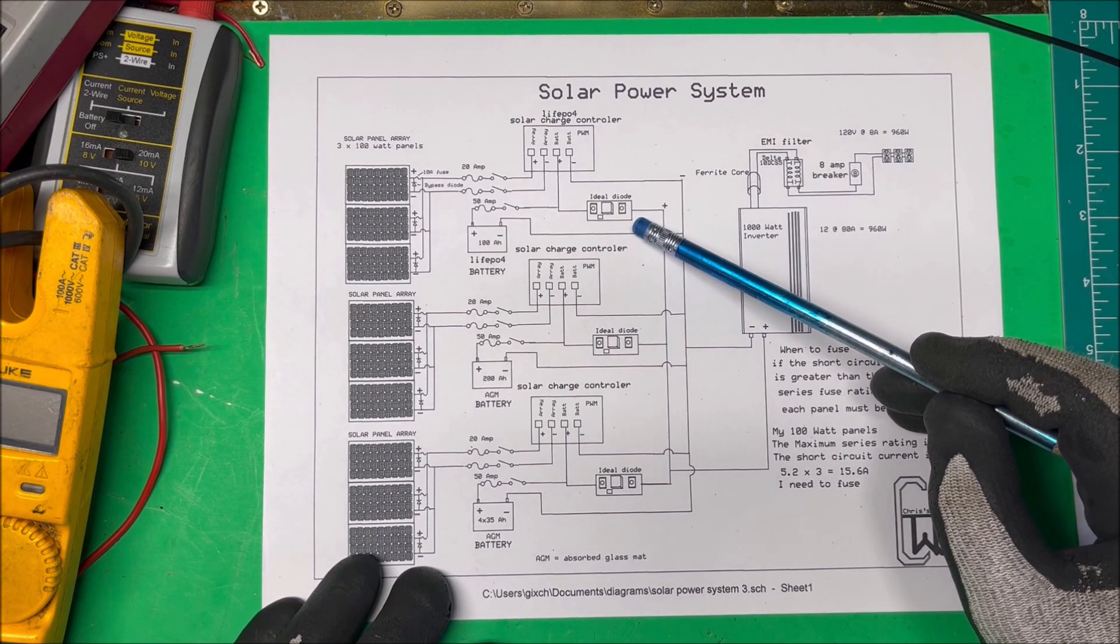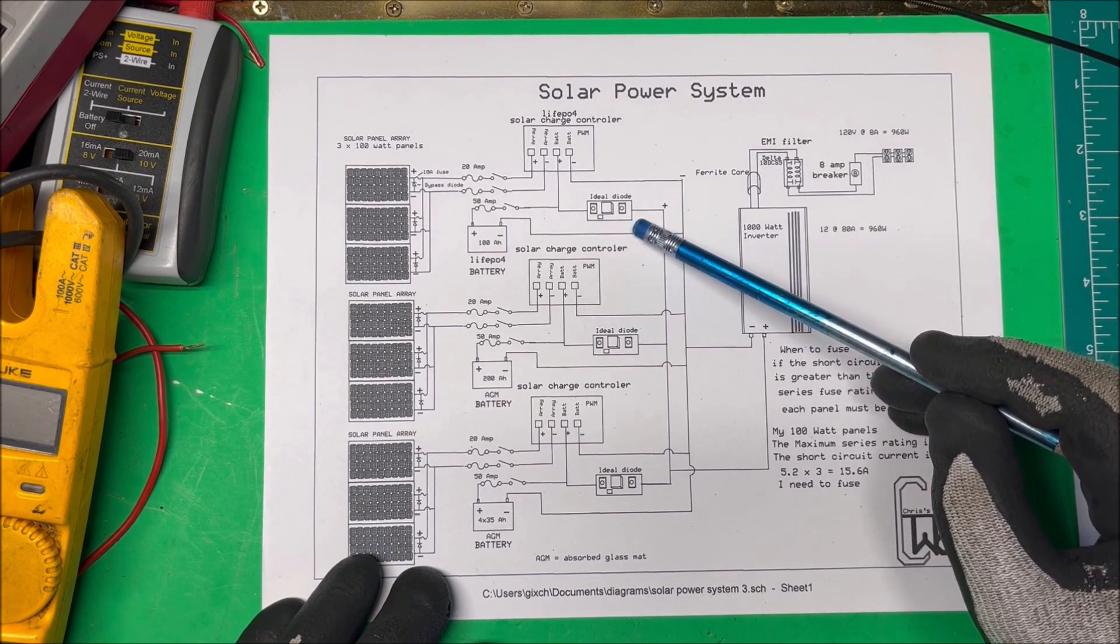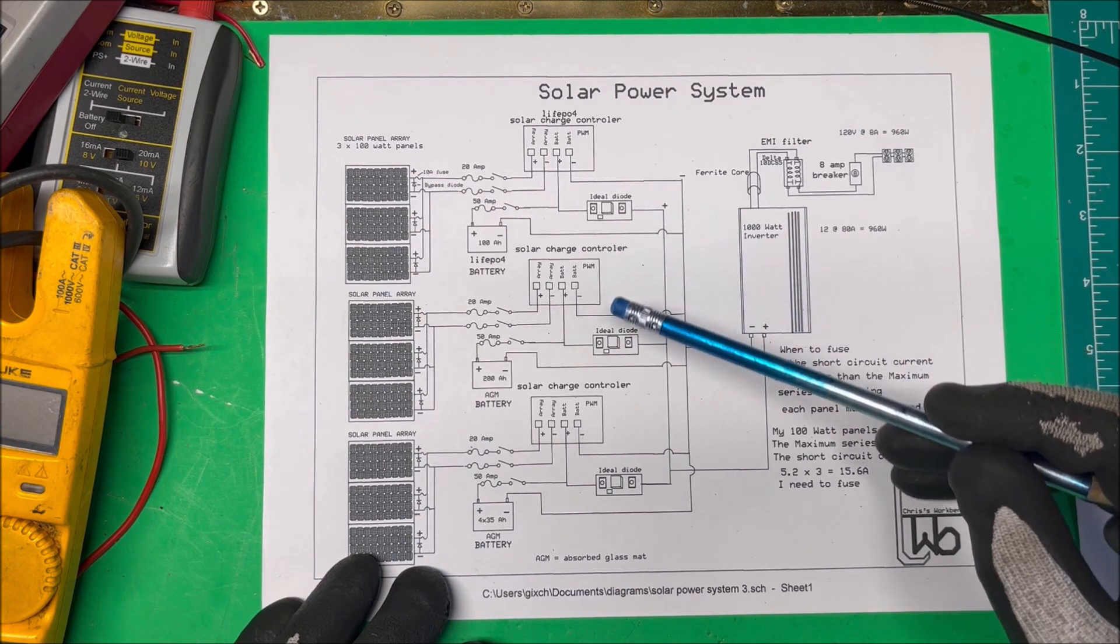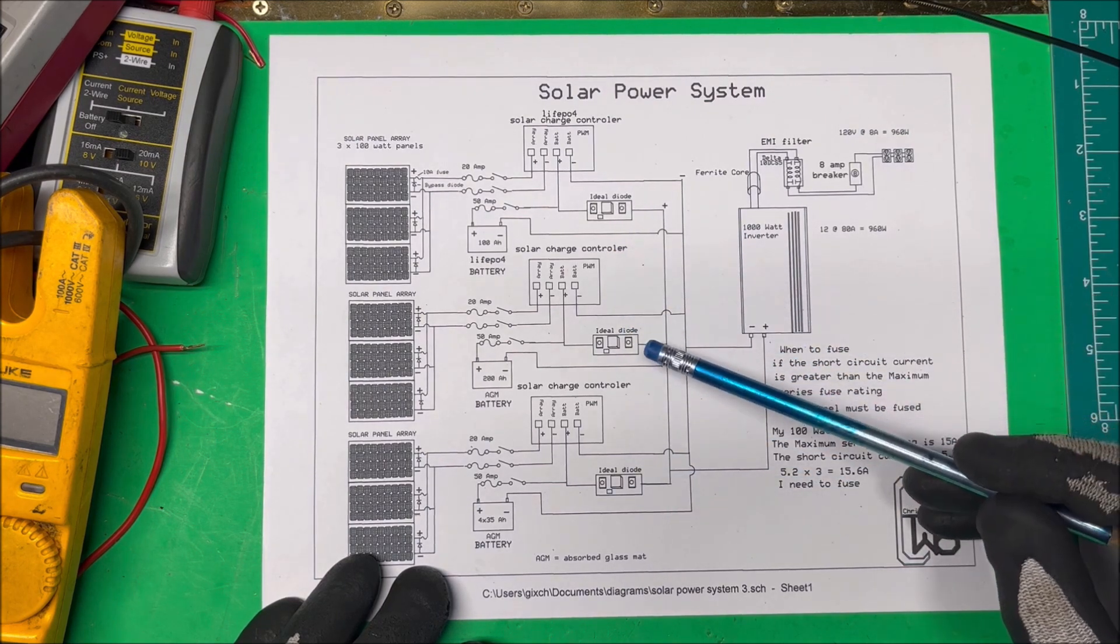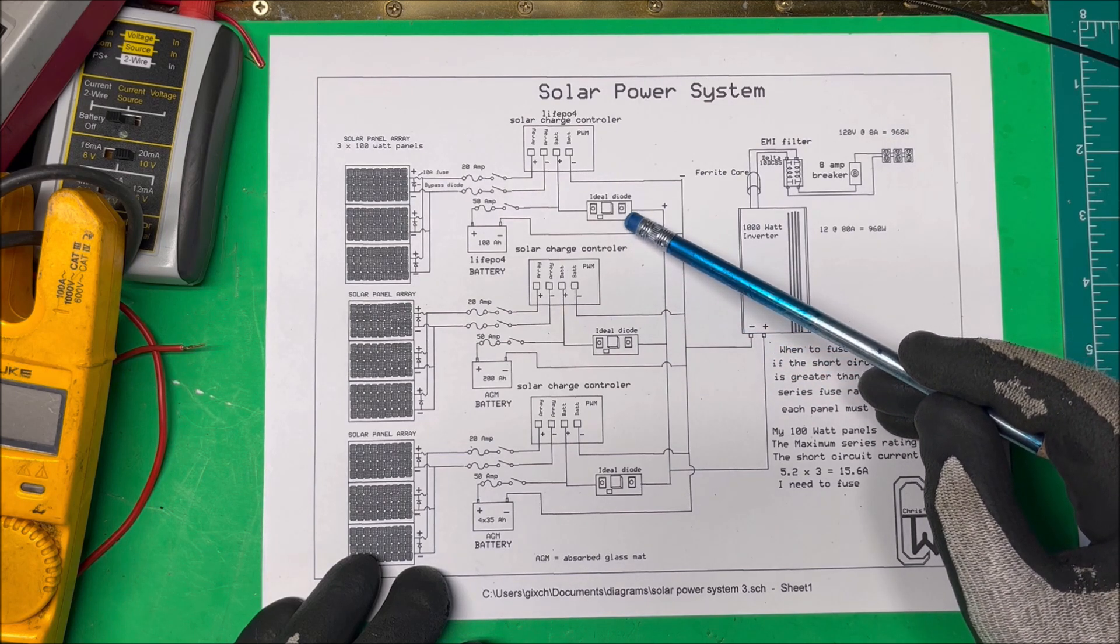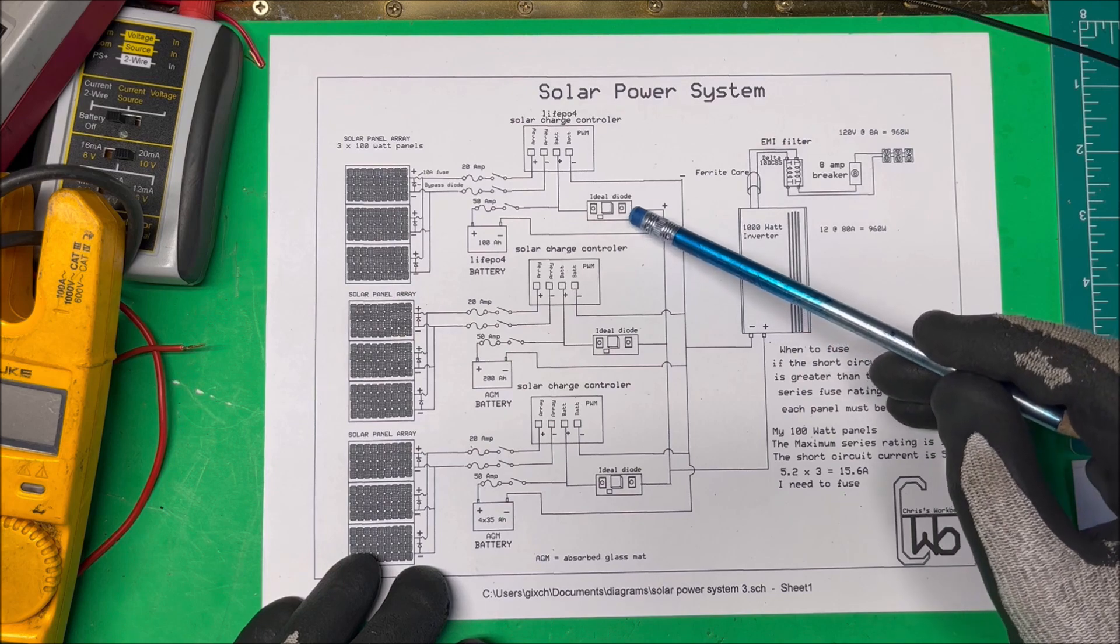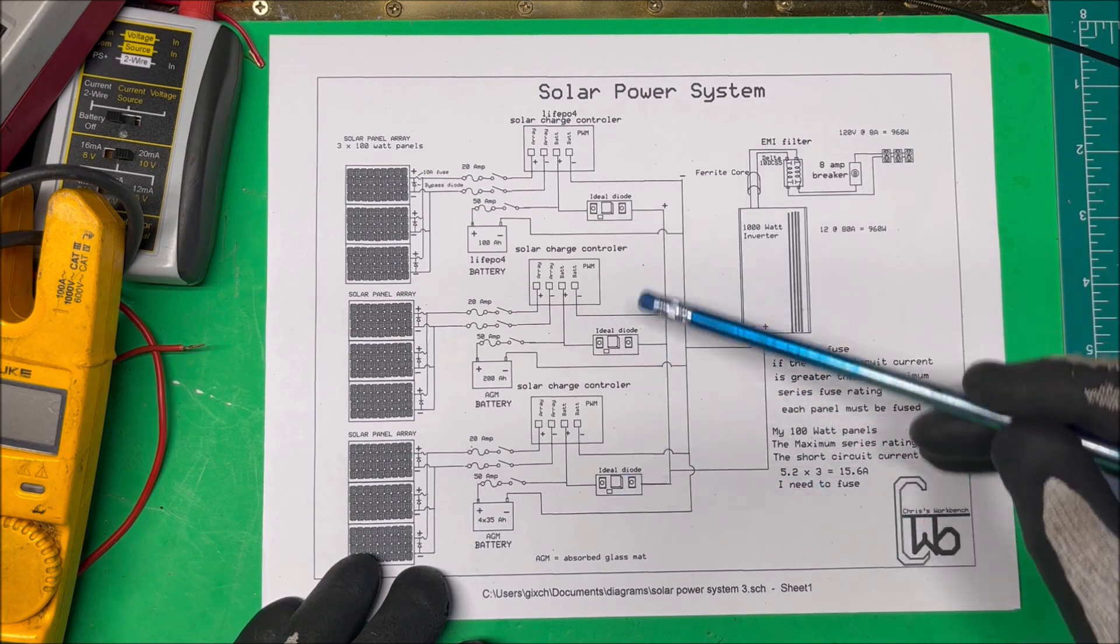The old diodes were Schottky diodes I had on here and they would drop 0.3 volts across them. At 20 amps that's 6 watts, so that could be 18 watts total here. These ideal diodes only drop 0.02 volts across them, so that's only about 0.4 watts. I'm saving a lot of wattage by going to the ideal diodes.